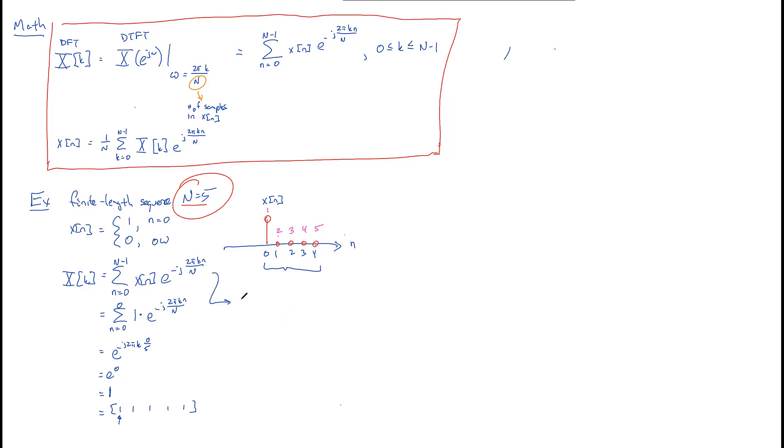You could have, if you wanted to, write it out long ways. And you'd get, this is x of 0 times e to the 0 plus x of 1 times e to the minus j 2 pi k. Here, n is going to be 1 over n plus x of 2, e to the minus j 2 pi 2 k over capital n plus, and all the way up to the highest value, which will be x of capital n minus 1 times e to the minus j 2 pi k, capital n minus 1, all over, all over capital n.